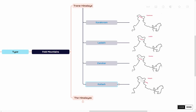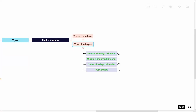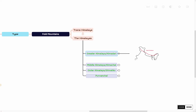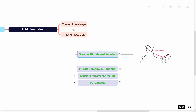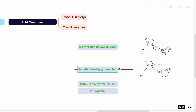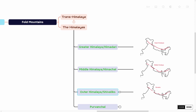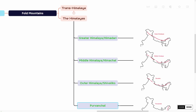Now moving on to another subdivision, that is the Himalayas. The Himalayas consists of four mountain ranges. Those are Greater Himalaya, also known as Himadri; the Middle Himalayas, also known as Himachal; Outer Himalayas, also known as Shivaliks; and the last one is Purvanchal.